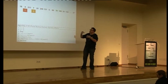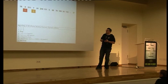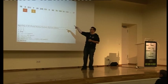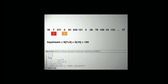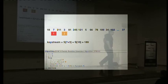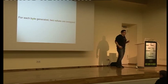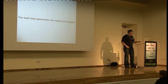How does PRGA work? It takes the S prime table and uses two registers I and J. Say I equals 1: then J = J + S[1], so if S[1]=3, then J=3. You swap those two values, slightly modifying the table. To get the first key stream byte Z, you take S[S[I] + S[J]] — so S[7+3] = S[10], which might be 189. That's one key stream byte. For each byte generated, only two values are swapped — perhaps enough to find weaknesses recovering S prime from the key stream.